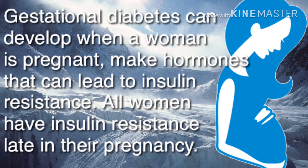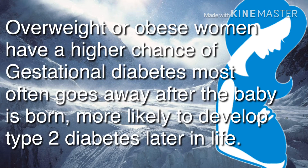Gestational diabetes can develop when a woman is pregnant, as hormones can lead to insulin resistance. All women have some insulin resistance late in pregnancy, but overweight or obese women have a higher chance of gestational diabetes. It most often goes away after the baby is born, but these women are more likely to develop type 2 diabetes later in life.